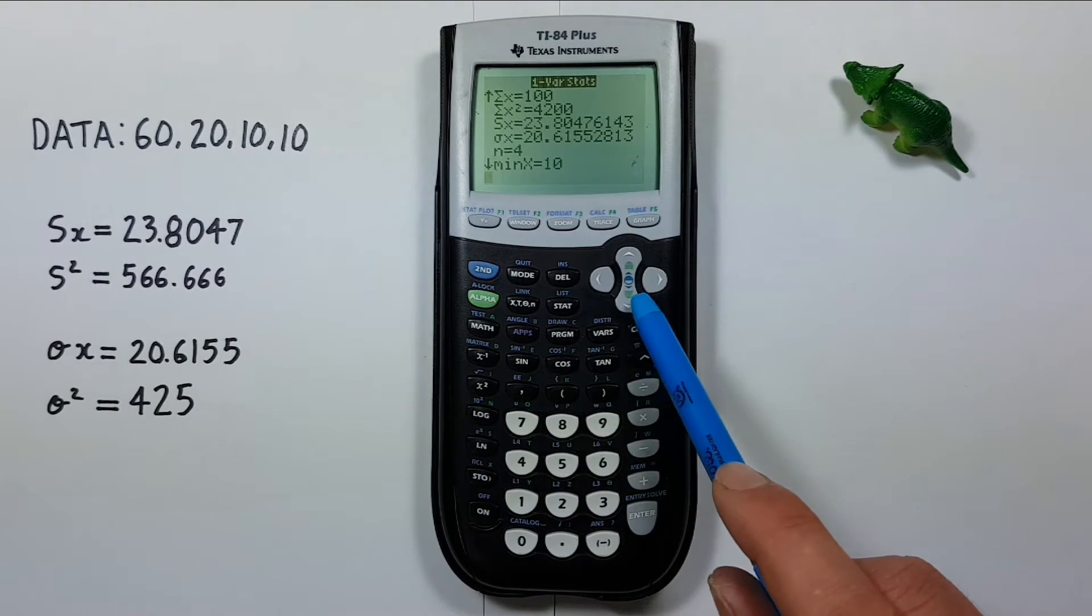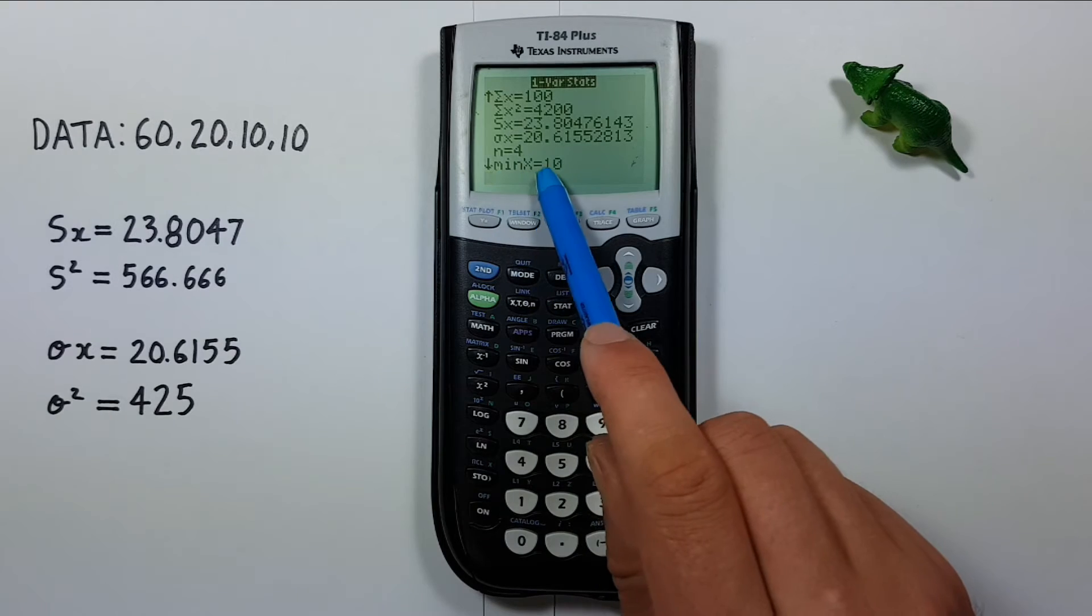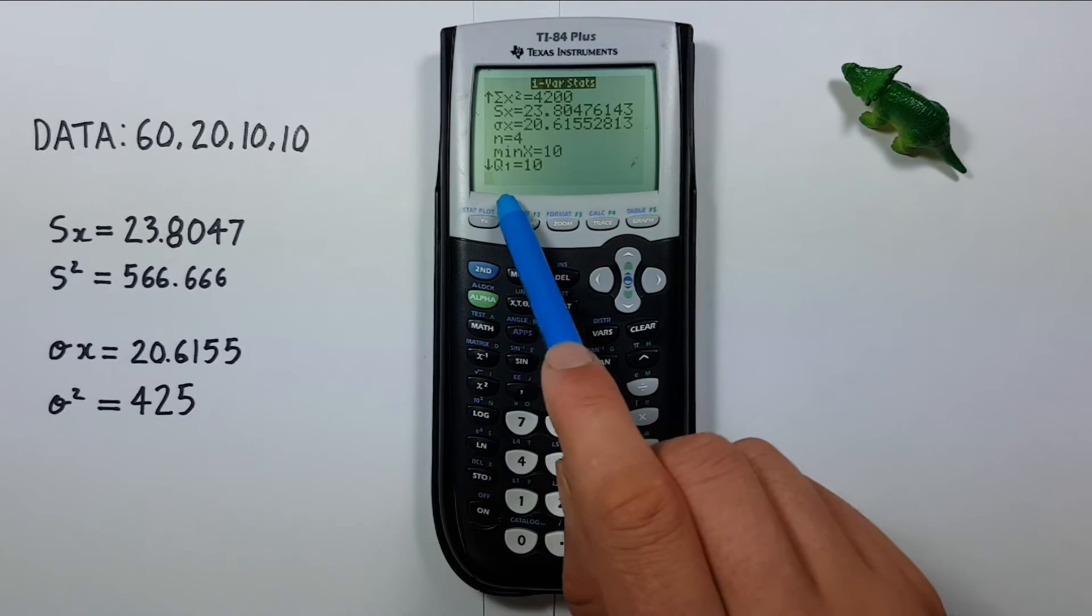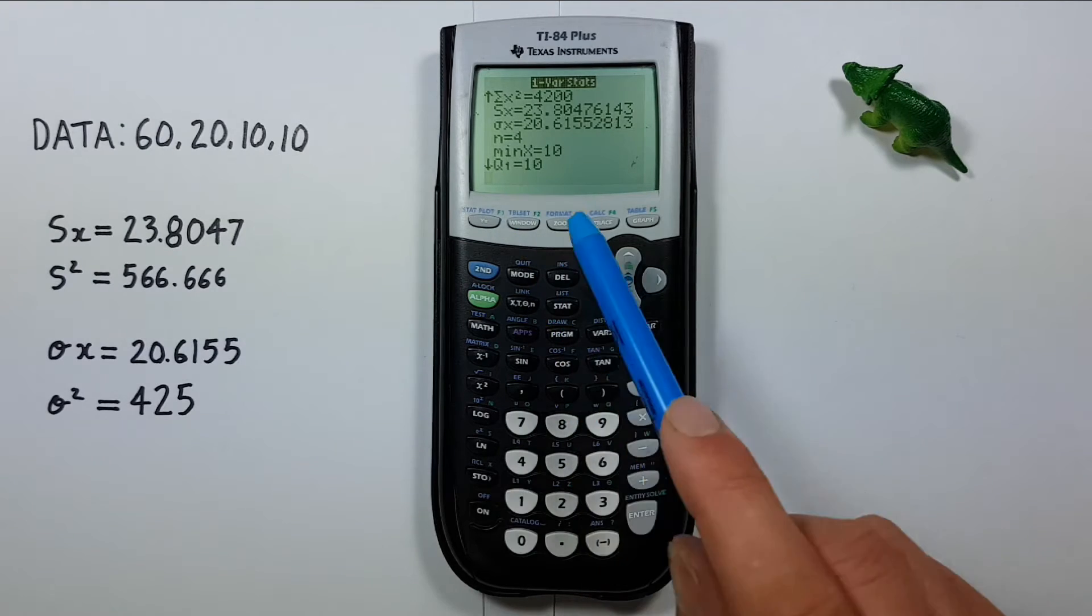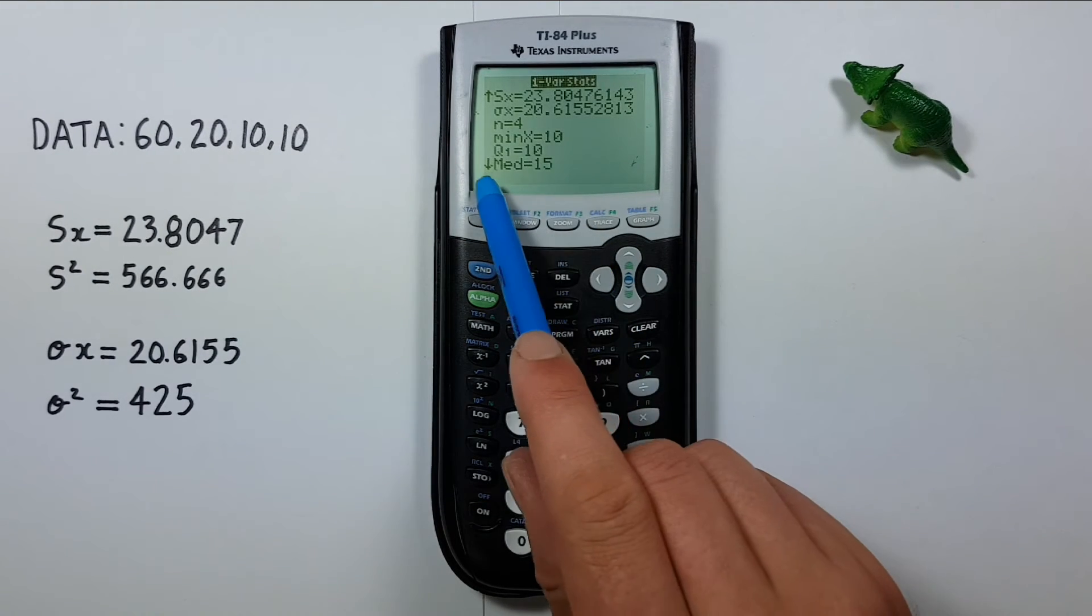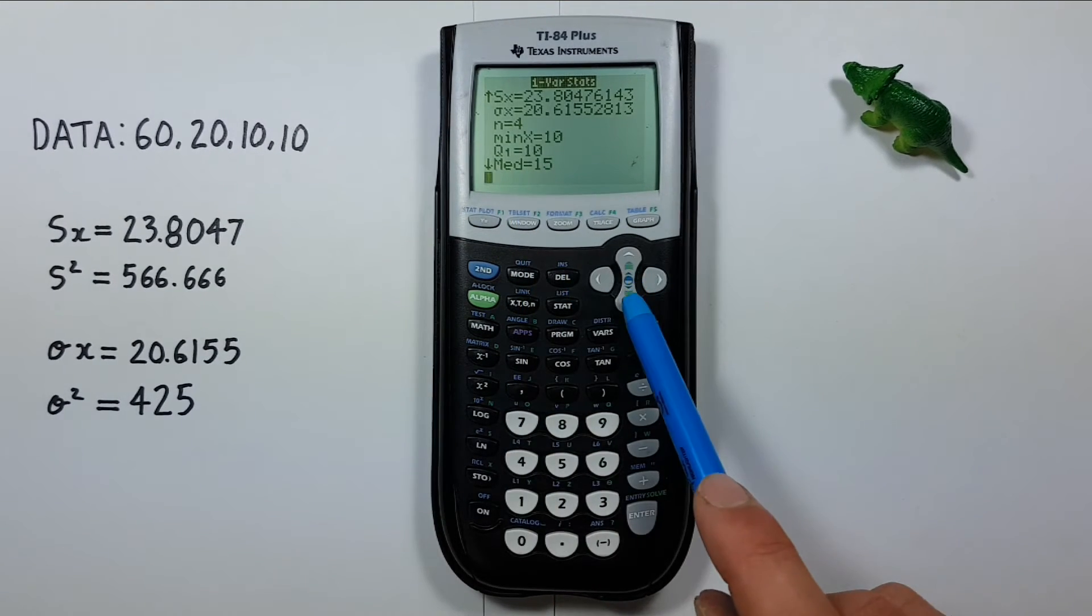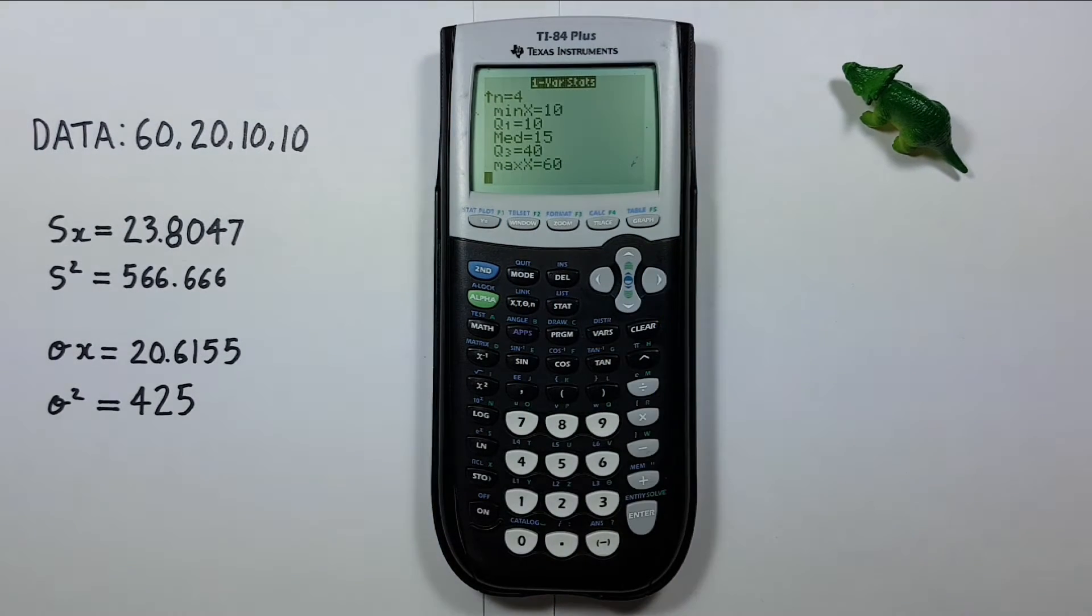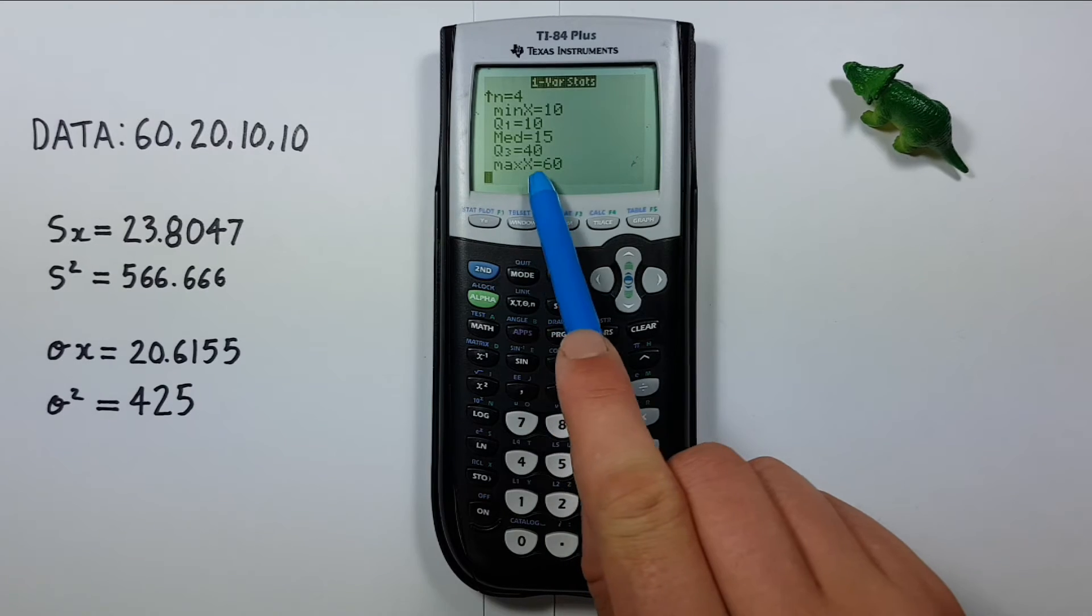And if we scroll down, we see we have a minimum x value of 10, a first quartile of 10, a median of 15, a third quartile of 40, and a max value of 60.